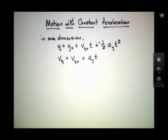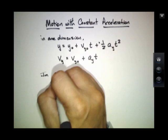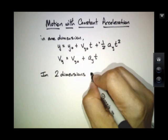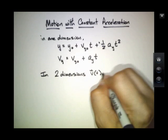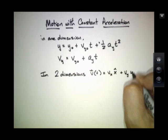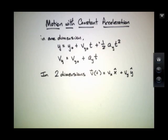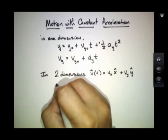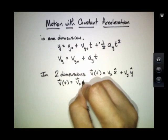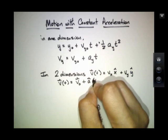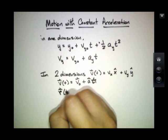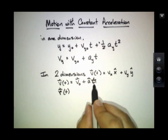In two dimensions, we actually have two components for the velocity, and likewise two components for the position. So our equations of motion are v(t) equals v-naught plus a times t,